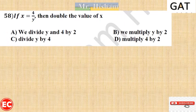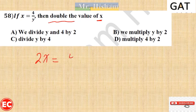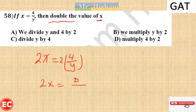Question 58: If x/y equals 4/y, then double the value of x equals which of the following? Double x means 2 times x. Since x = 4/y, then 2x = 4/y times 2 = 8/y. Among the choices: we multiply 4 by 2, not y by 2, not divide. The right answer is D.